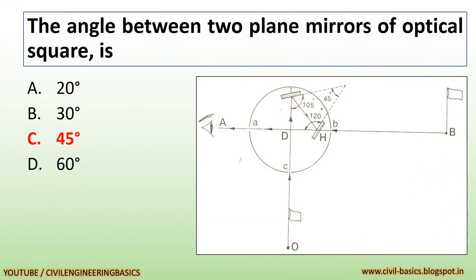The angle between two plane mirrors of an optical square is 45 degrees.